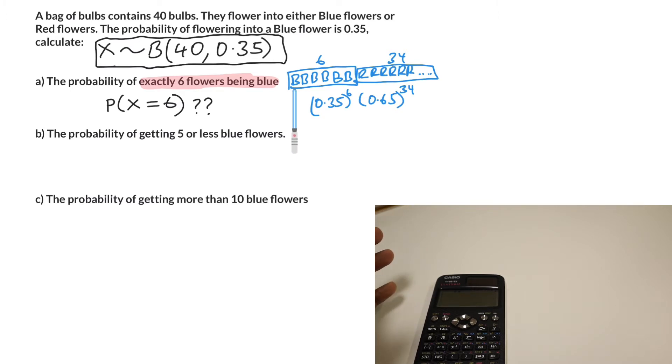From what I've drawn here, the first six flowers are going to be blue and then the other 34 are red, but that's not always true. This can have lots of different combinations. To find out how many combinations you have, you could use 40 choose 6. You've got to use the combination button on your calculator for that.